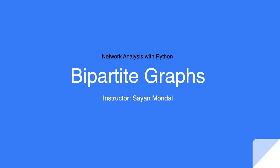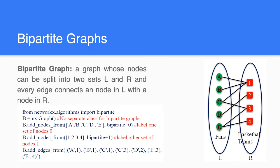Hello everyone, welcome to another video of the network analysis and Python series. In this video we will talk about bipartite graphs. A bipartite graph, or bigraph, is a graph whose vertices can be divided into two disjoint and independent sets L and R, such that every edge connects a vertex in L to one in R. The vertex sets L and R are usually called the parts of the graph. A bigraph is a graph that does not contain any odd-length cycle.